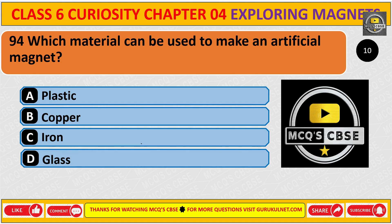Which material can be used to make an artificial magnet? The correct answer is C. Iron.